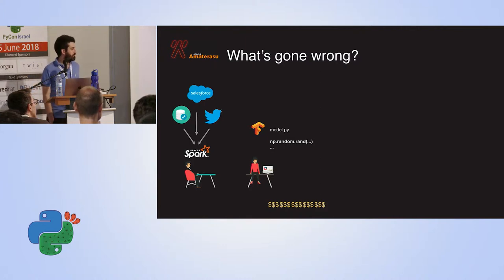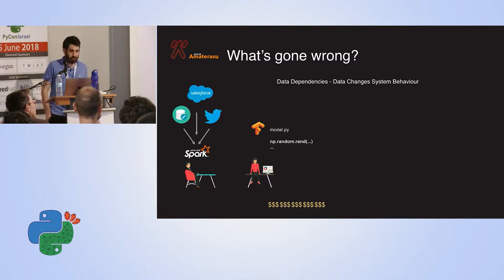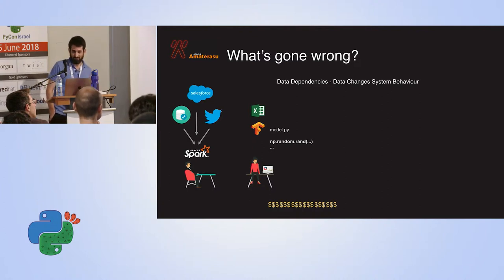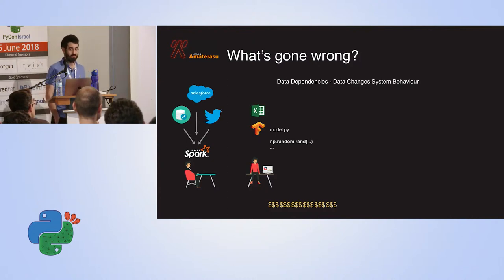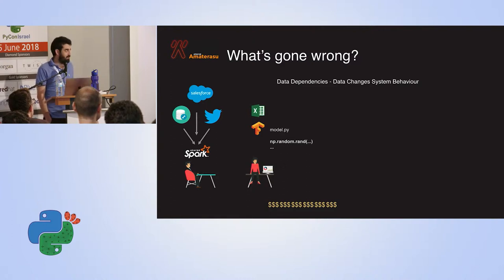Everything looks fine — except, finally, we have a problem. It's called data dependencies. She has a model and John is collecting data, and when it's done, he gives her his data. At this point, she finds out the harsh truth: the subset she used wasn't nearly big enough to represent reality, and she now needs to do everything again. That sucks.